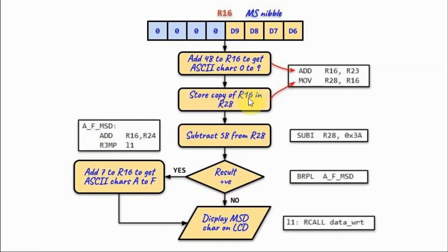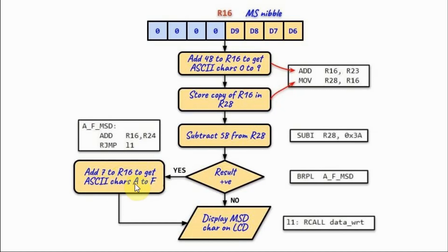We store a copy of R16 in R28, then subtract 58 from R28 using the subtract immediate instruction. We check the result using branch-on-plus. If the result is negative, the ASCII values correspond to characters 0 to 9 and we display it on the LCD as the most significant digit. If positive, the values correspond to characters A to F, so we jump to a subroutine where we add 7 to R16 to get the correct ASCII values, then display it on the LCD.